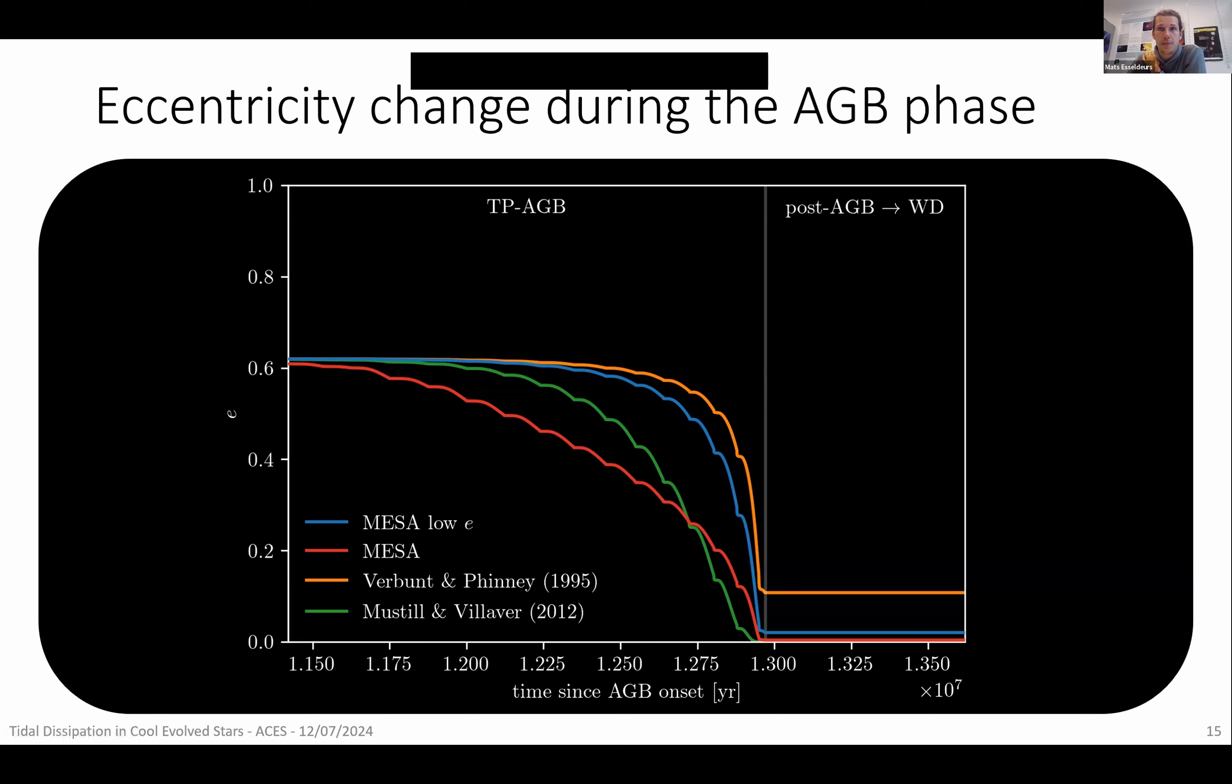And just a very quick other question is, so MESA uses itself prescriptions for tides. It's not an ab initio calculation. It's somebody's equations. Yes. Whose equations are they? And for both the equilibrium and the dynamical tides? So the equations used in MESA itself is only the equilibrium tide. And I think it's the Hurley prescription, but I am not sure. Which basically comes down to something like these equations, but just a slightly different pre-factor in a sense.